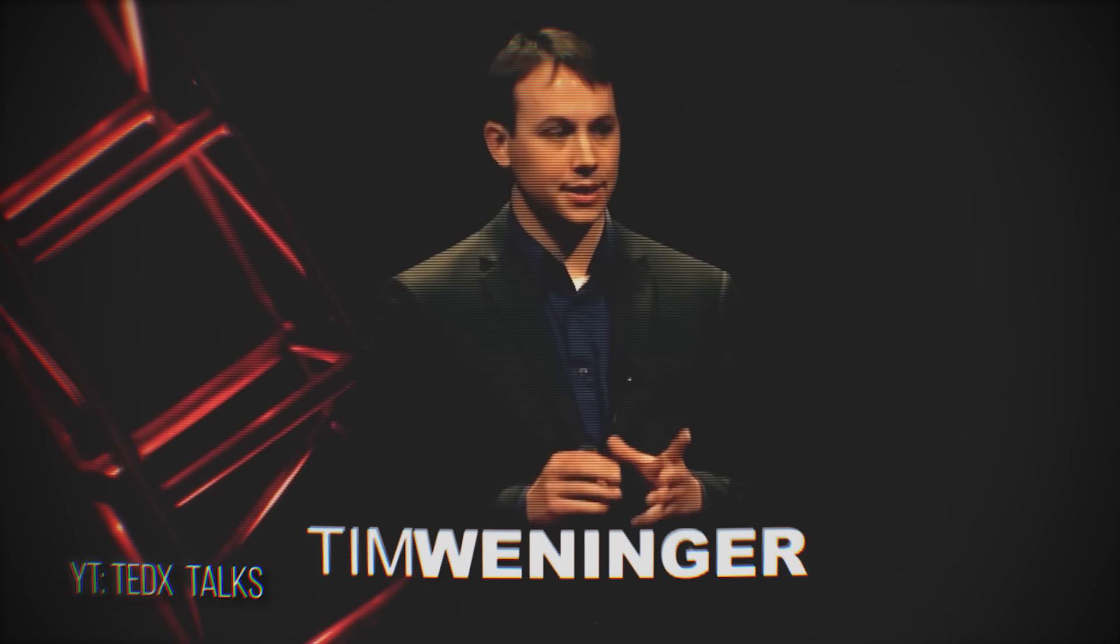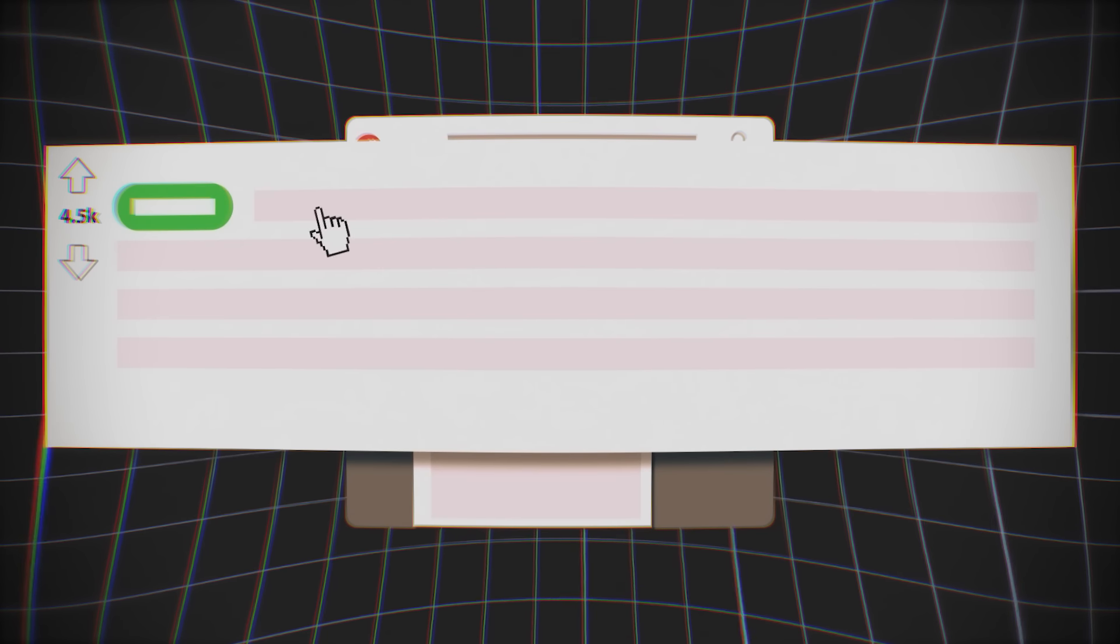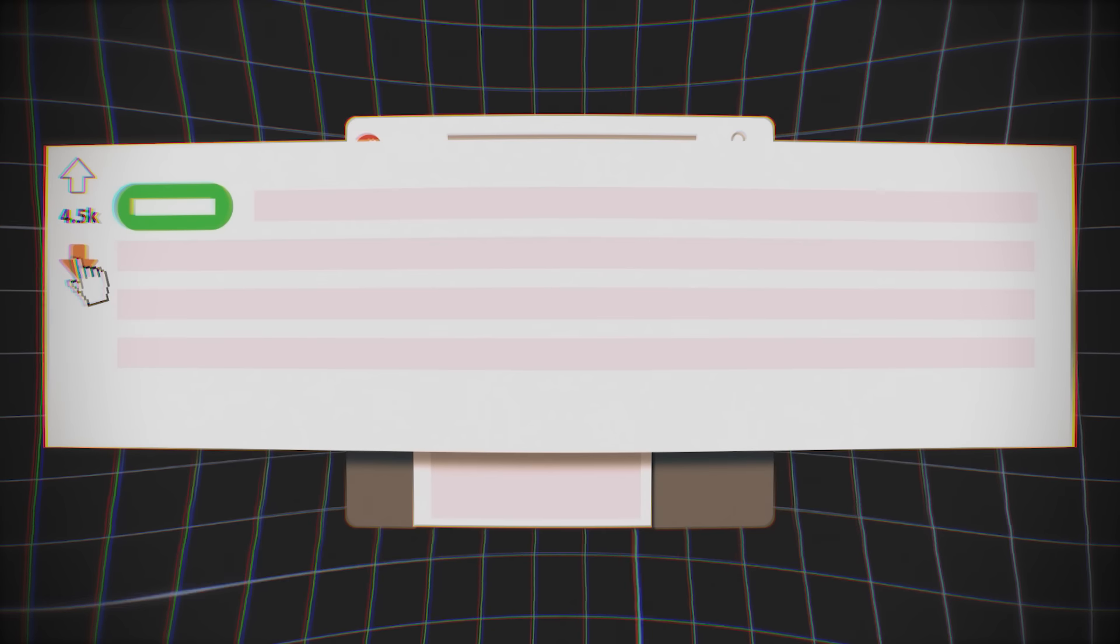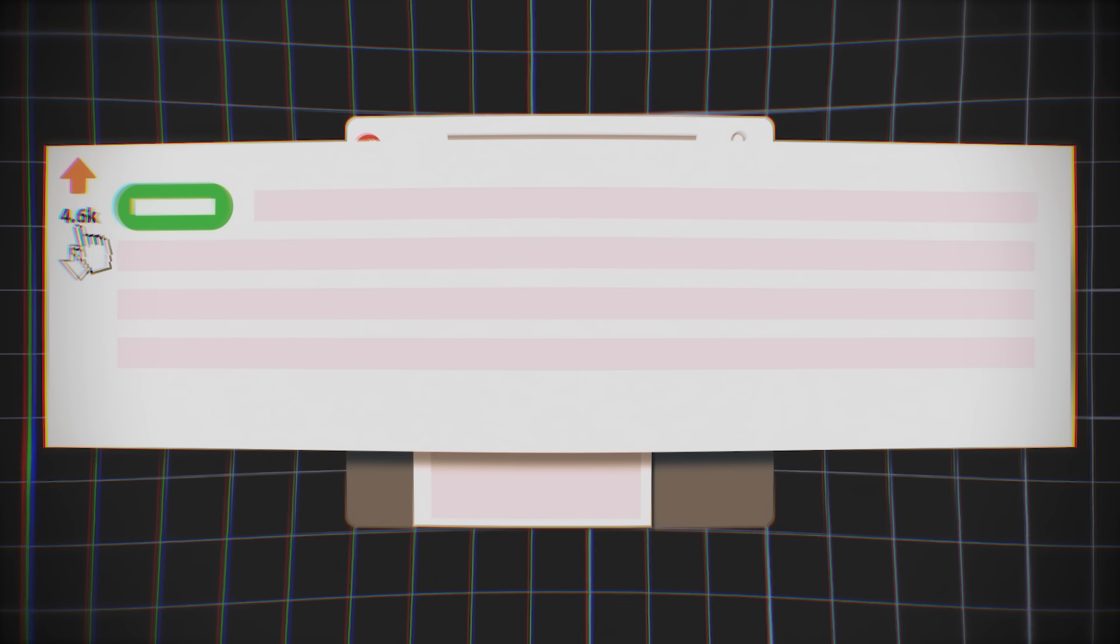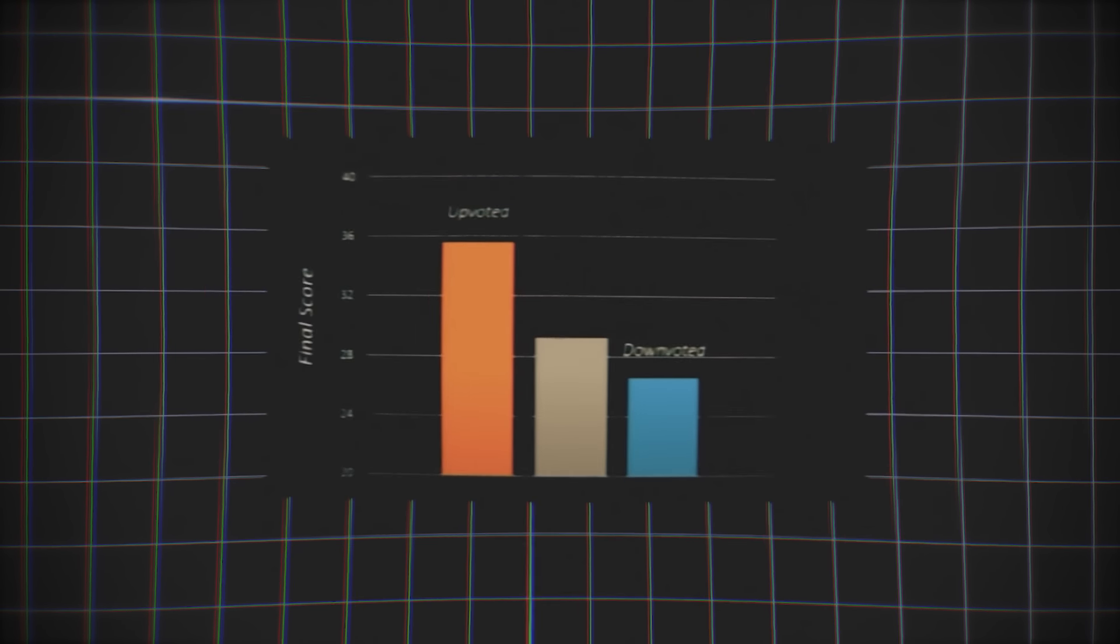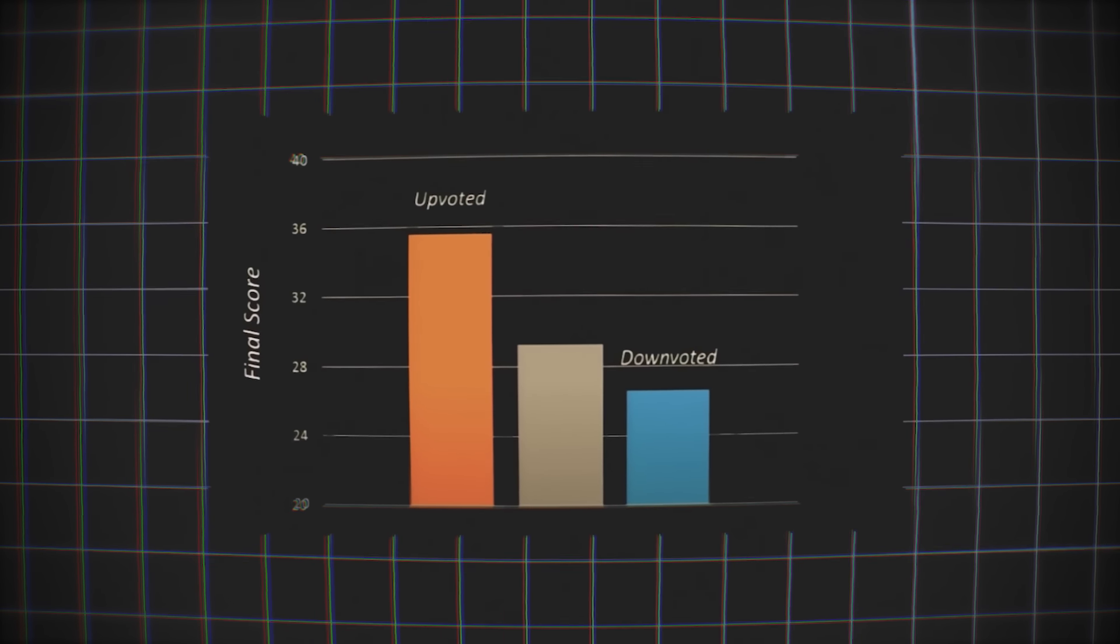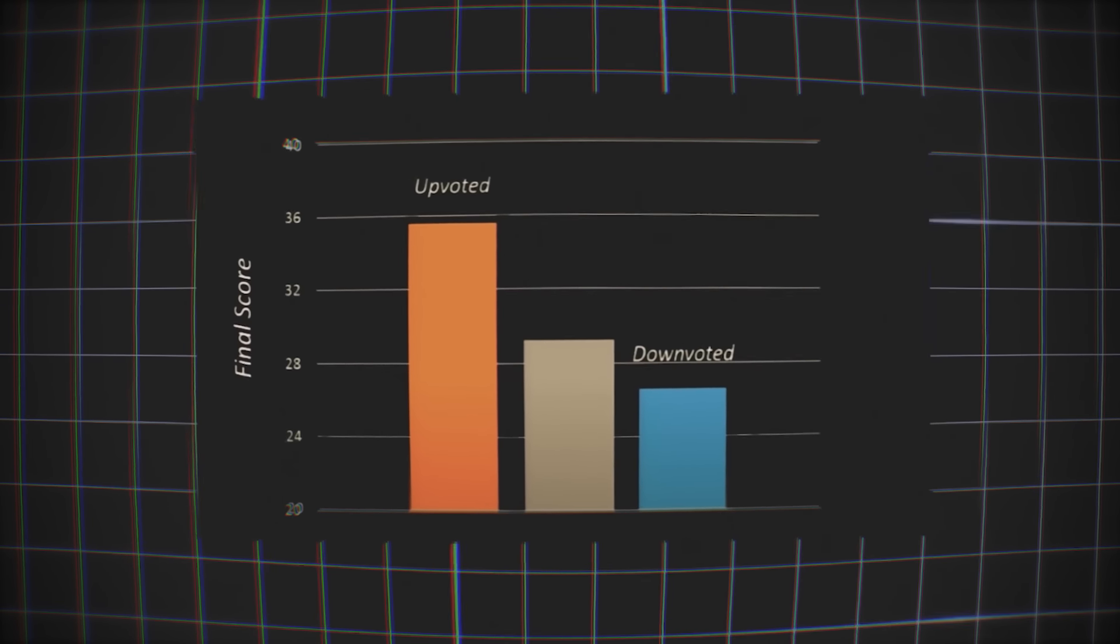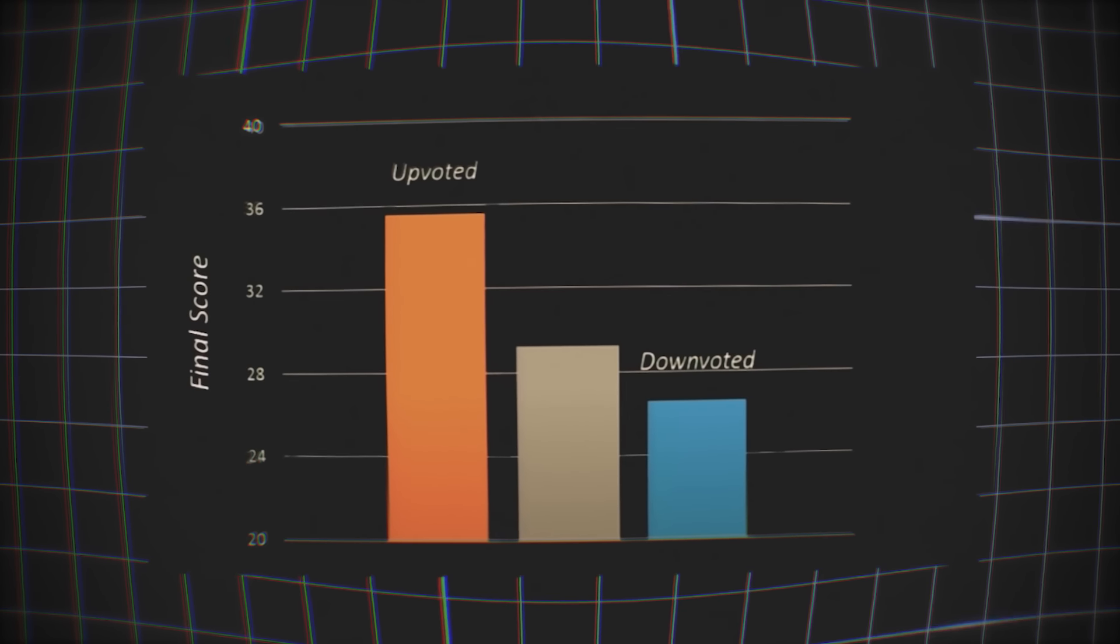In 2013, Tim Wenninger did an interesting experiment. On Reddit, when someone makes a post, you could either upvote it if you like the post or downvote it if you don't. Tim created a computer program that randomly upvoted or downvoted recent posts. This program ran every day for six months. So what was the conclusion? If he upvoted something initially, the average score would be much higher. If he downvoted something initially, the score would be much lower. The same thing happened in regards to getting on the front page of Reddit.